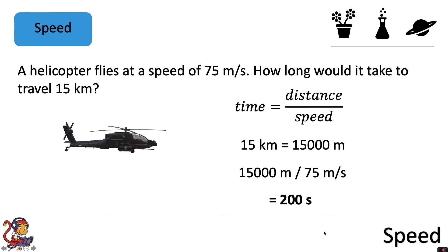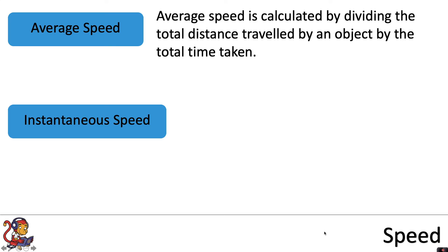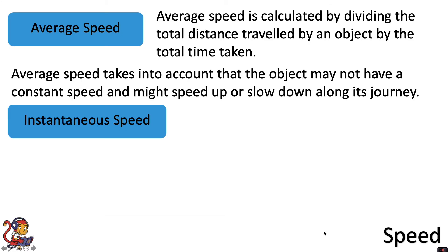There are two different types of speed: average speed and instantaneous speed. Average speed is calculated by dividing the total distance traveled by an object by the total time taken. Average speed takes into account that the object may not have a constant speed and might speed up or slow down along its journey.